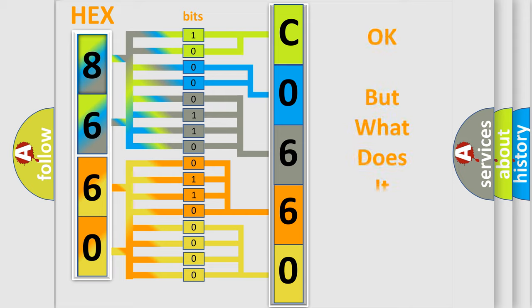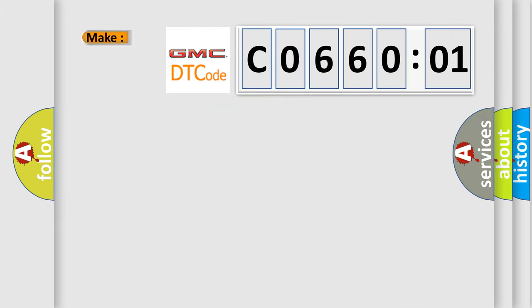The number itself does not make sense to us if we cannot assign information about what it actually expresses. So, what does the diagnostic trouble code C0660:01 interpret specifically for GMC car manufacturers?